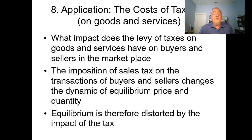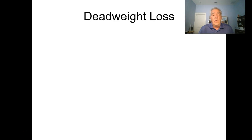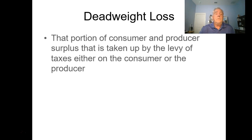Equilibrium is distorted by the impact of the tax. You go into the supermarket, see the barcode price—say $3.50—and think you're paying that price, but at the cash register there's a 6, 7, or 8 percent sales tax added. When governments put a tax on retail sales, the result is called a dead weight loss: the price moves off the equilibrium point, and that difference is the dead weight loss—part of the consumer and producer surplus taken away by taxes.